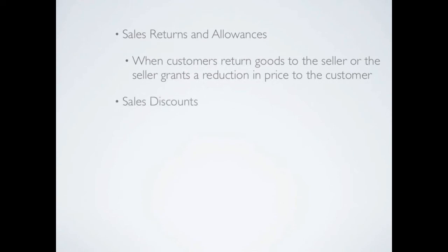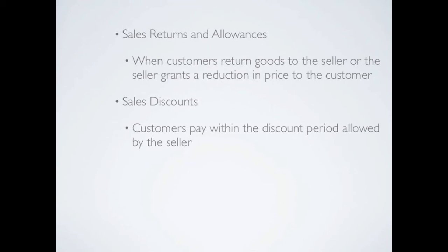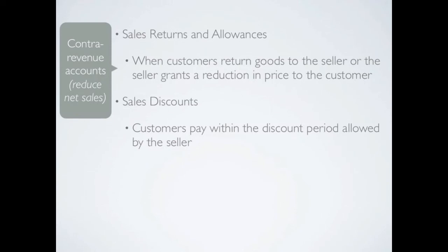Sales discounts, again unlike purchase discounts, is an actual account. Sales discounts occur when customers pay within the discount period allowed by the seller. These two accounts — sales returns and allowances and sales discounts — are called contra revenue accounts. We know that revenues carry a credit balance, so contra revenues carry a debit balance and they effectively reduce the value of our sales. We take our sales and subtract our two contra sales accounts to give us net sales.